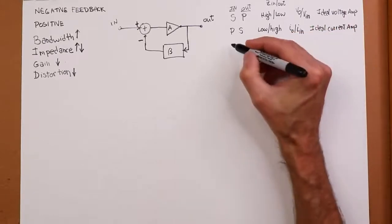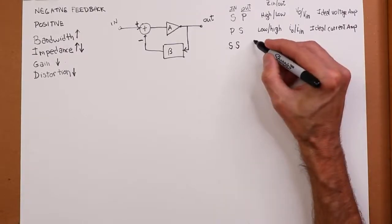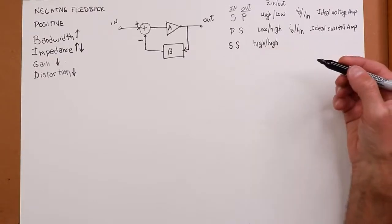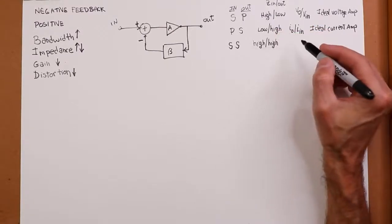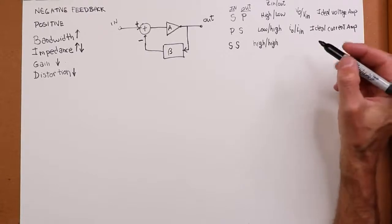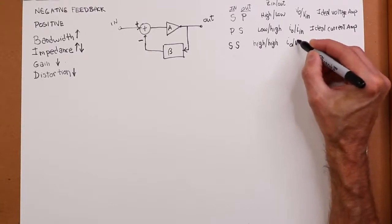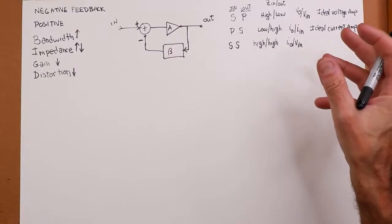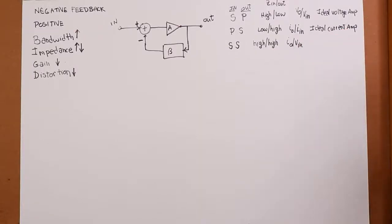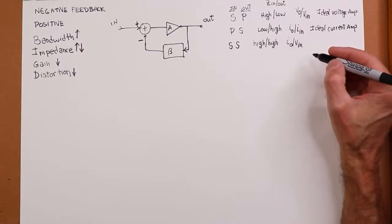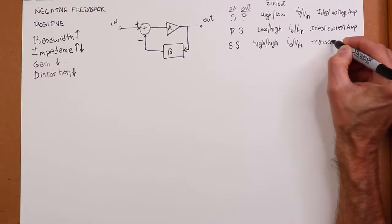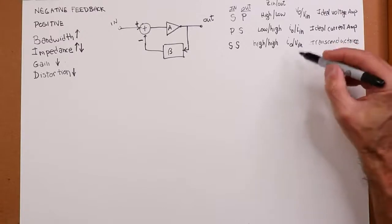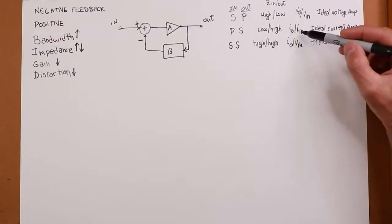Then we have series-series, which is high impedance for both input and output. High input impedance means voltage sensing, and high internal impedance means current output. So that's I-out over V-in — that's a transducer going from voltage to current, which we call transconductance. So this is a transconductance amplifier, also called a voltage-controlled current source. By comparison, series-parallel is a voltage-controlled voltage source, and parallel-series is a current-controlled current source.